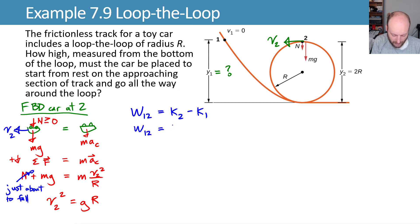That means that we have 1/2 mv2 squared minus 1/2 mv1 squared. This v1 is starting from rest which means that this will end up being zero.